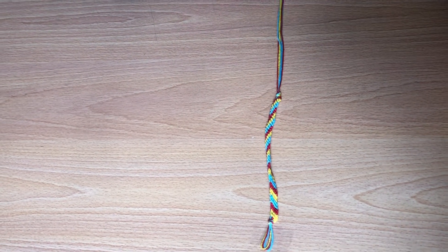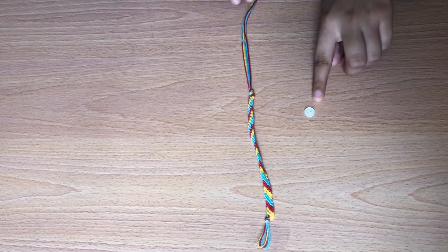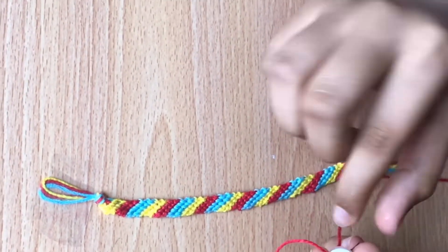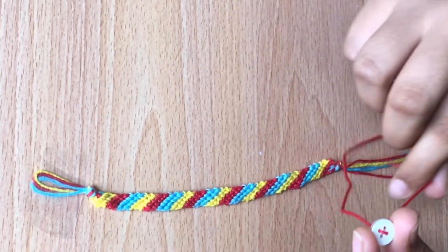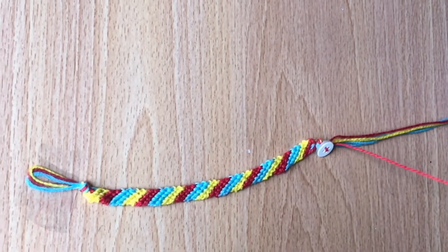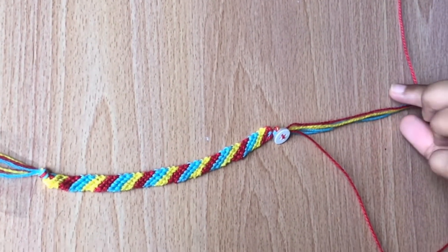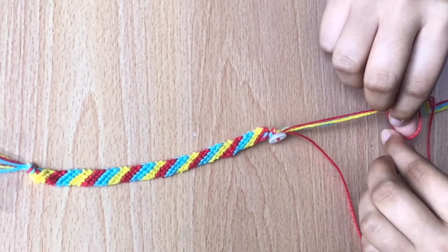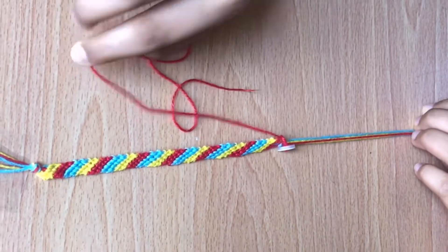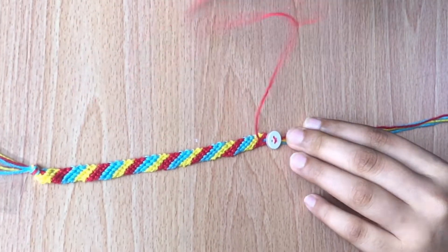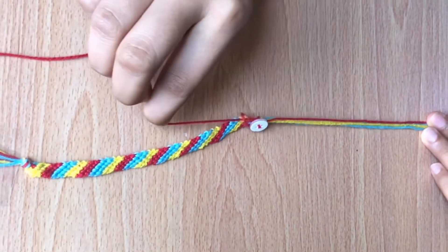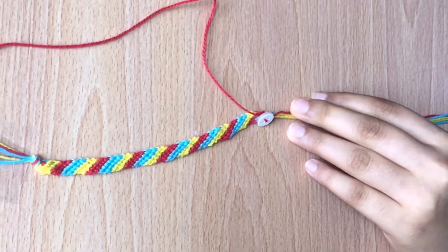And now I'll be using a regular button to tie the bracelet on. So take a piece of thread and put it in through one of the holes like that and pull the button. Then take the same thread and tie a knot and do it once more. Now we can cut off the excess thread.